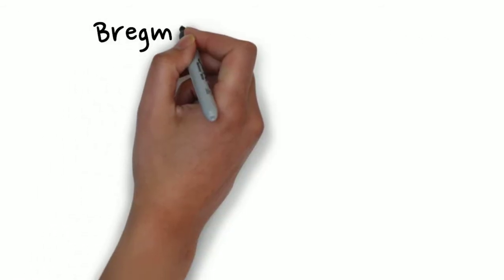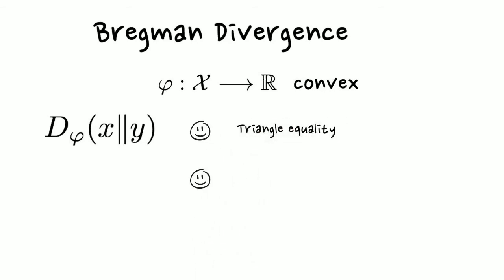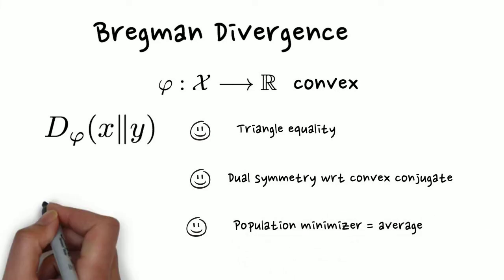When phi is convex, we have many nice properties, including the triangle equality, dual symmetry with respect to the convex conjugate, and a population minimizer being the expected value.